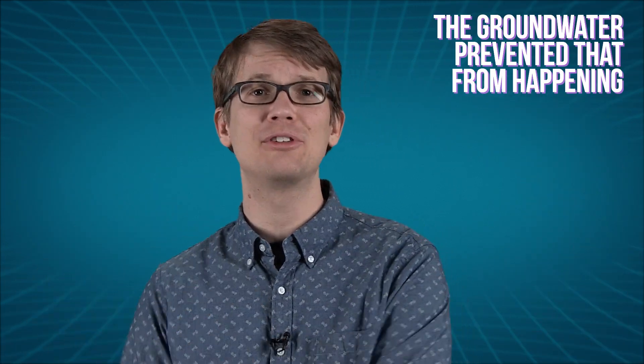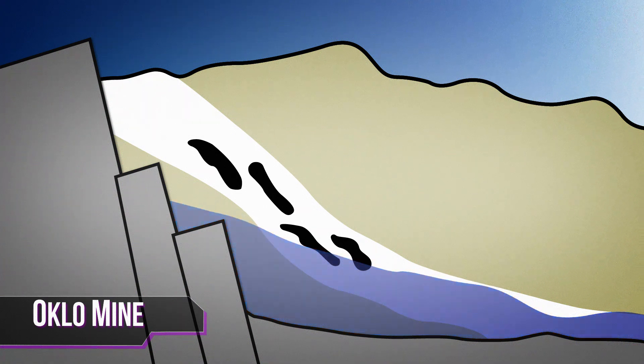Now, you'd think that with all these atoms getting split and energy being released, things would spin out of control pretty fast. But it turns out that the groundwater prevented that from happening as well. As more and more uranium split, the energy being released made the water hotter. After about half an hour, the water would get so hot that it would start to boil off. And without the groundwater to slow them down, the neutrons would start moving too fast to hit any more uranium, which would quickly stop the reaction.